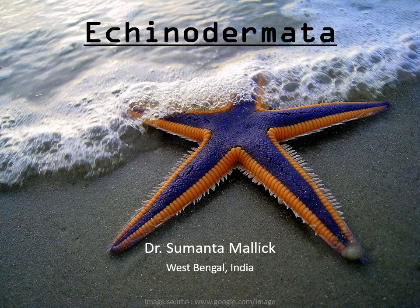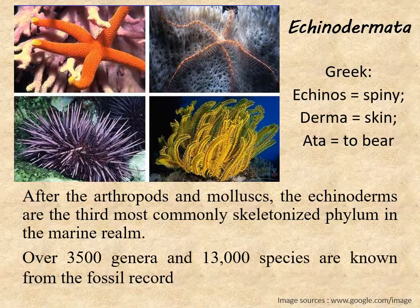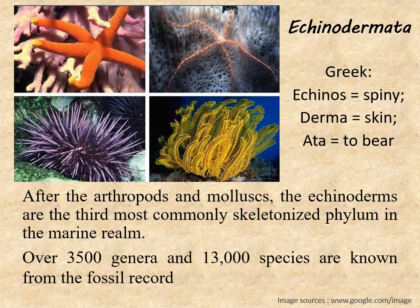Good morning everybody. Today we will discuss about another invertebrate group, that is Echinodermata. The word Echinodermata came from three Greek words: the first one is 'echinos', the second is 'dharma' which means skin, and the third is 'ata' which means to bear. So Echinodermata means those organisms which have a spiny skin.